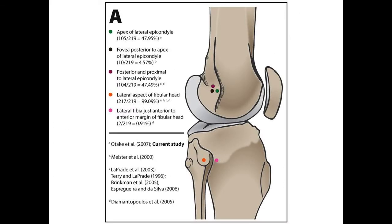Further, there was variability in the reported location of the Fibular Collateral Ligament proximal attachment. When combining our data with these studies, 48% of Fibular Collateral Ligaments were reported to attach directly to the apex of the lateral epicondyle, approximately 5% to a fovea posterior to the lateral epicondyle, and the remaining 47% posterior and proximal to the lateral epicondyle.